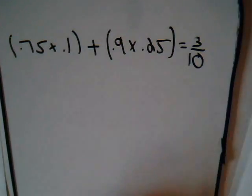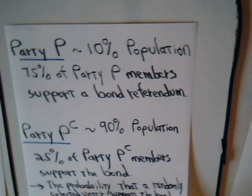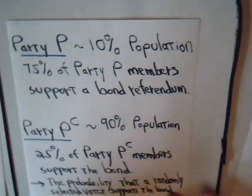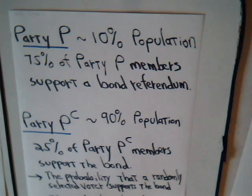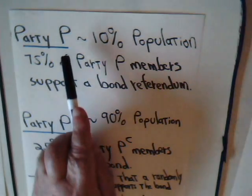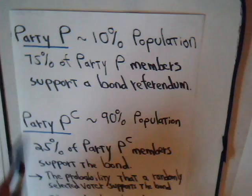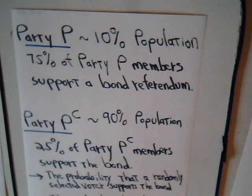Now we consider the second part of the problem. Remember, for the minority Party P, 75% of its members support the referendum, and for the opposition party, 25% do. If you randomly encounter a voter who supports the bond referendum, they might be from the opposition party or from Party P. What is the probability that they're from Party P, not from the opposition party?